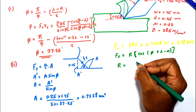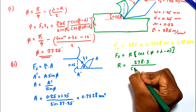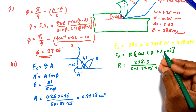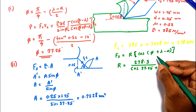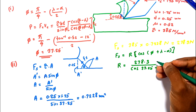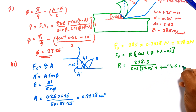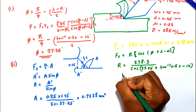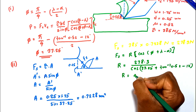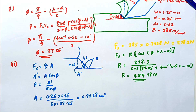R equals Fs divided by cos(phi + lambda - alpha). Fs is 278.3 N, phi is 37.25 degrees, lambda is tan inverse of 0.52, and alpha is 12 degrees. The resultant force R, which is the vector resultant of cutting force and thrust force, equals 459.78 newton.